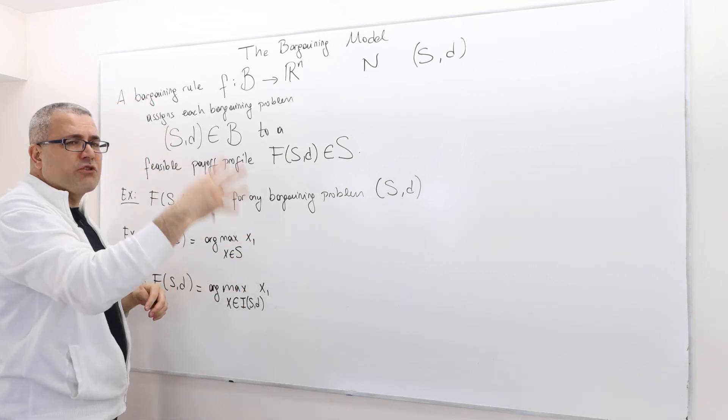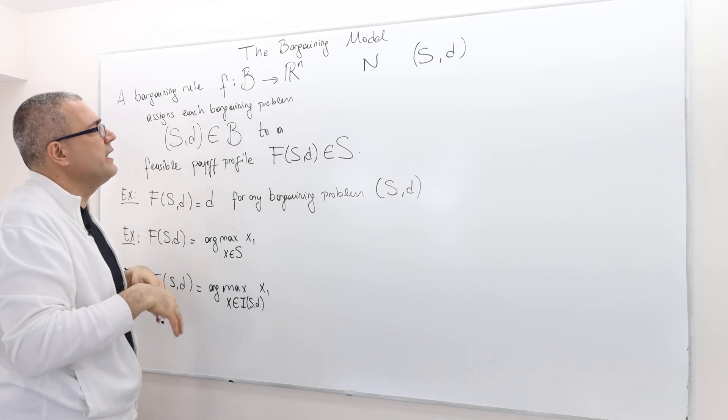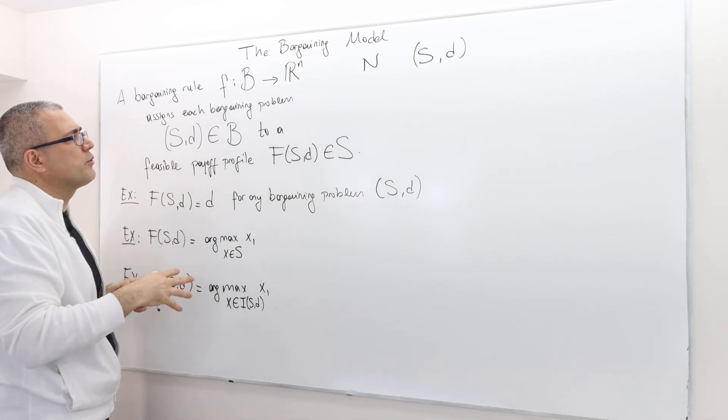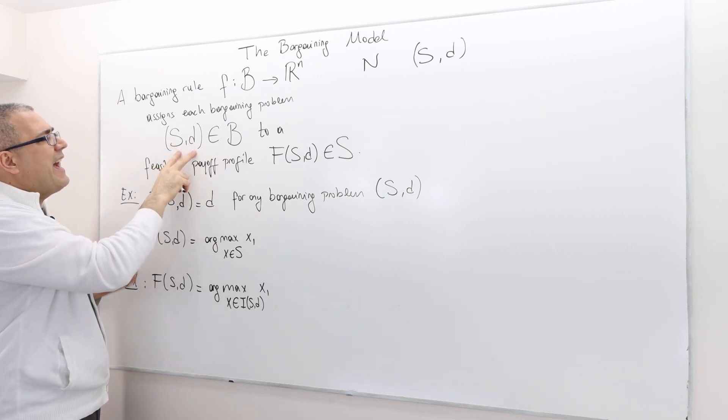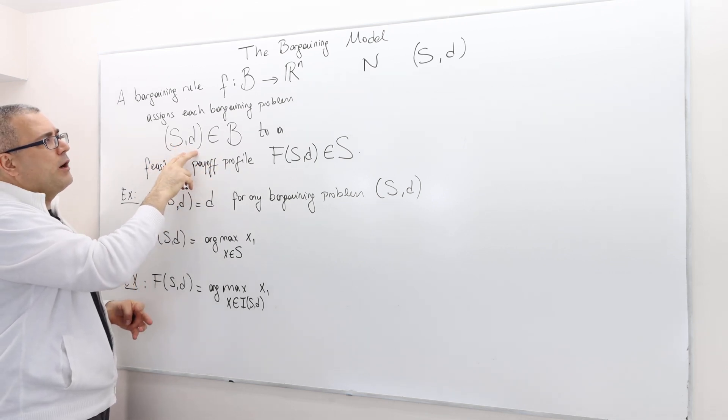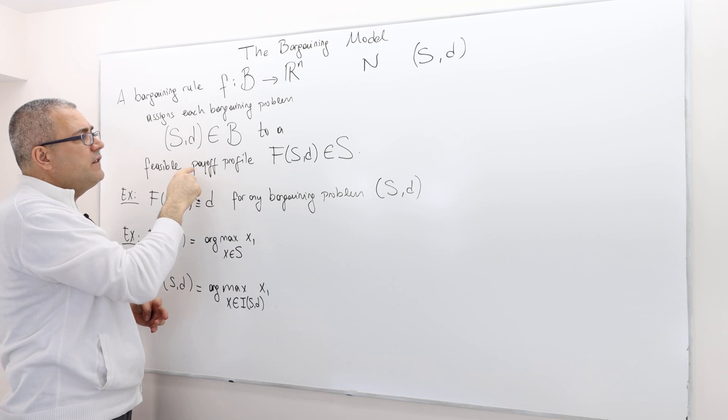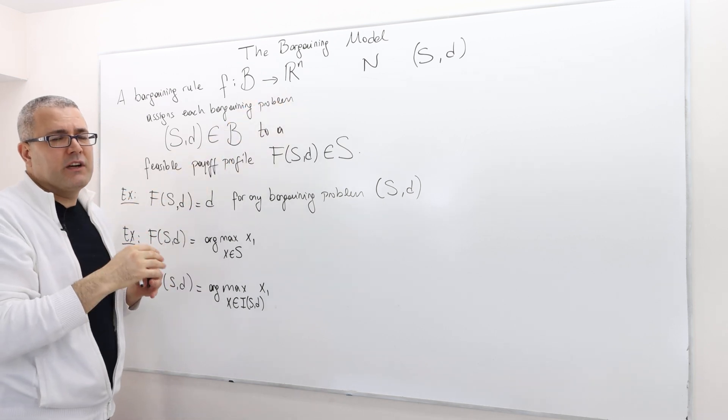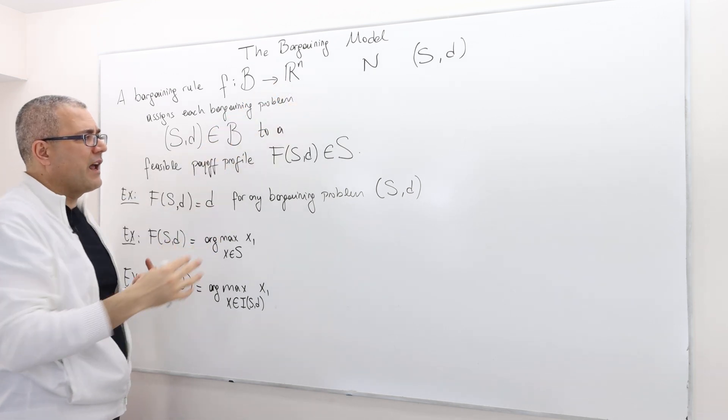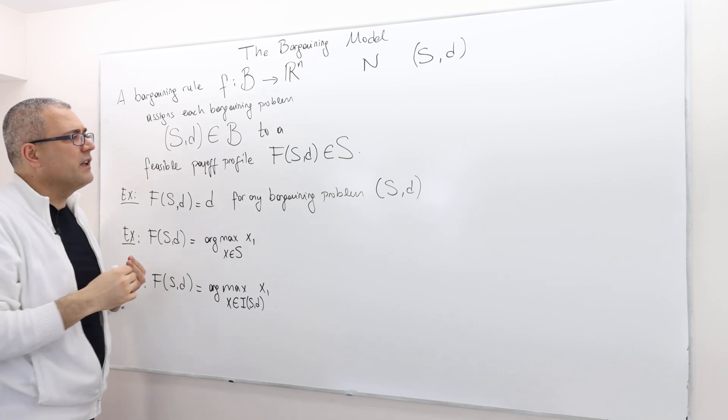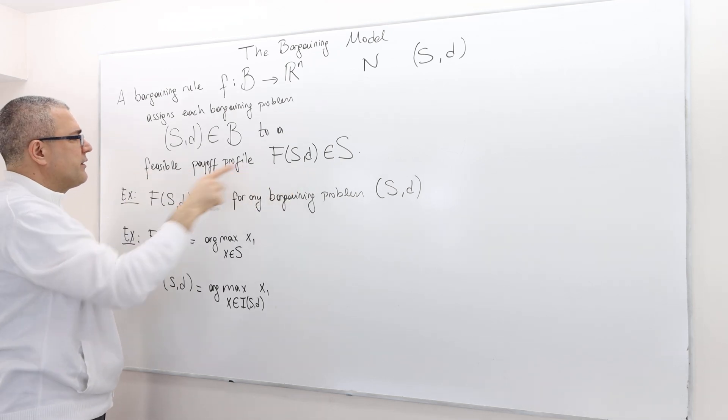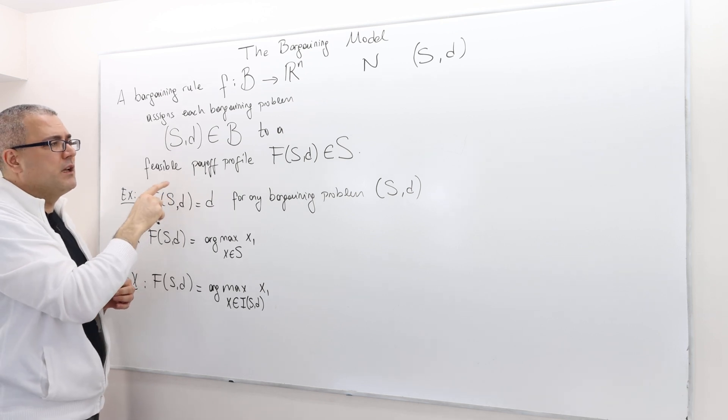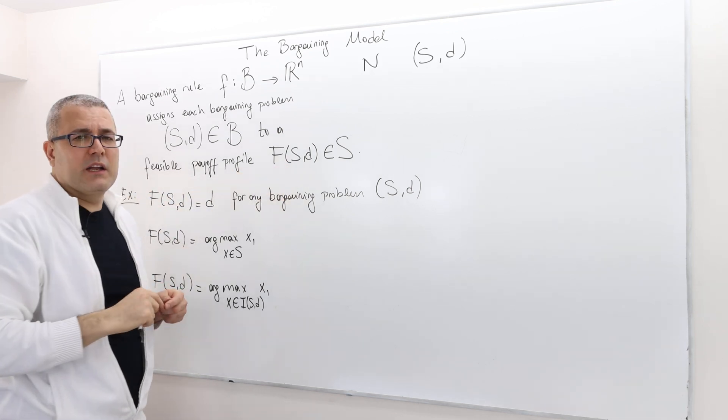You create all those potentially infinitely many bargaining problems. So the bargaining rule is going to map every single bargaining problem in this set into a vector, a payoff vector in R^n.